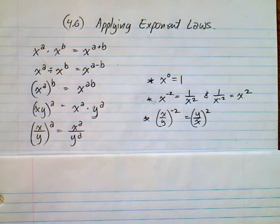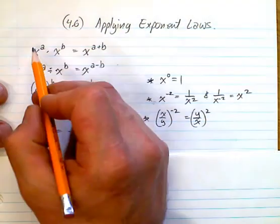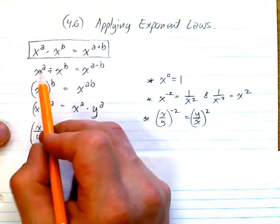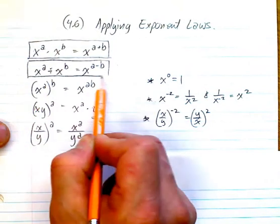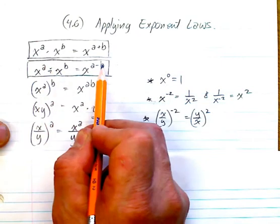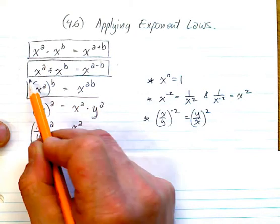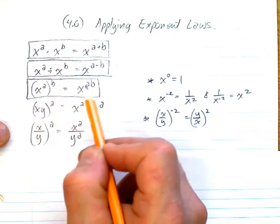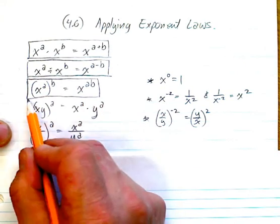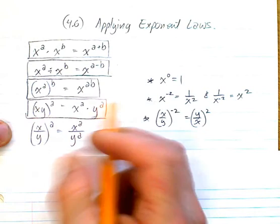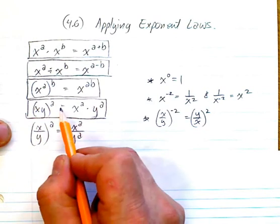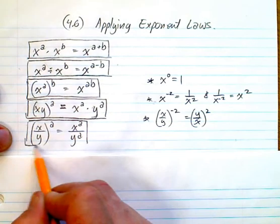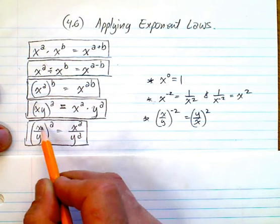This is a summary of all the exponent laws. This one here is called the product law because when you multiply with the same base, you add the exponents. This one is called the quotient law or division law because when you divide with the same base, you subtract the exponents. This is the power to a power law - if you have x to the a all to the power of b, we multiply those exponents. And this is the distribution law: if you have xy to the power of a, that equals x to the power of a times y to the power of a.